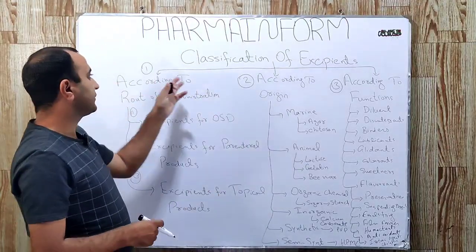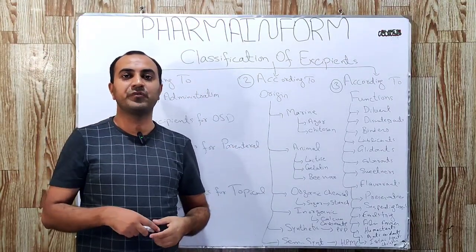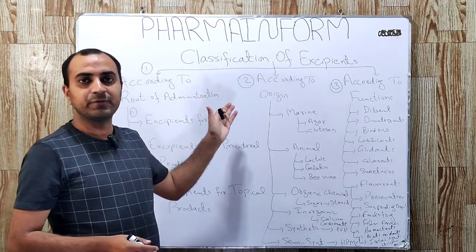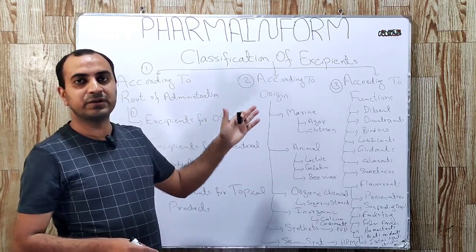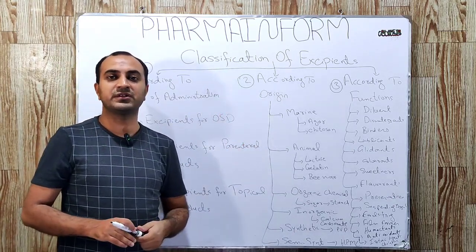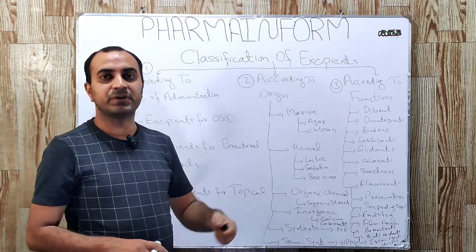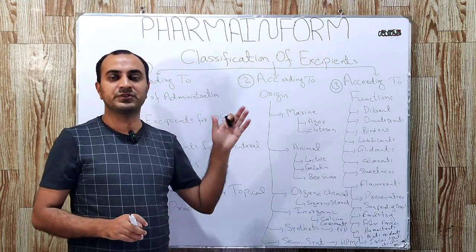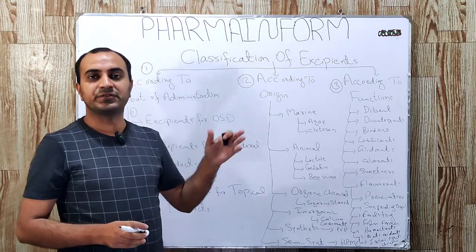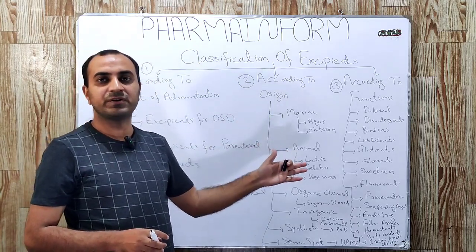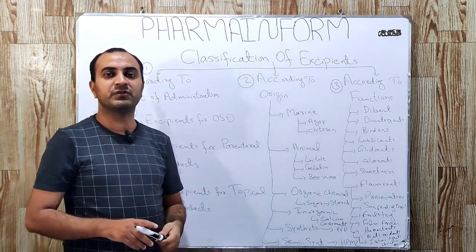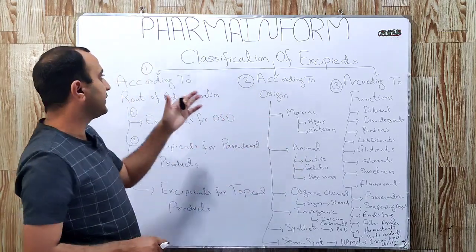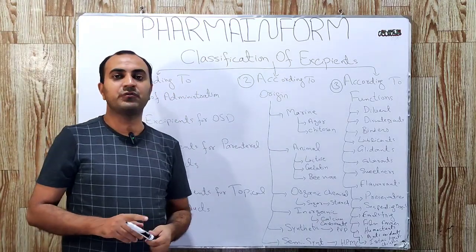Hello everyone, I am Sajjad and today we will discuss the classification system of excipients — how we classify excipients, we will learn in detail. This table is a very basic table, but if you learn this table, you can easily understand all the excipient classification systems. If you have not watched the previous video in which we discussed excipient introduction, definition, properties and functions, the link is given in the description — first watch that basic video. So let's start: classification of excipients.